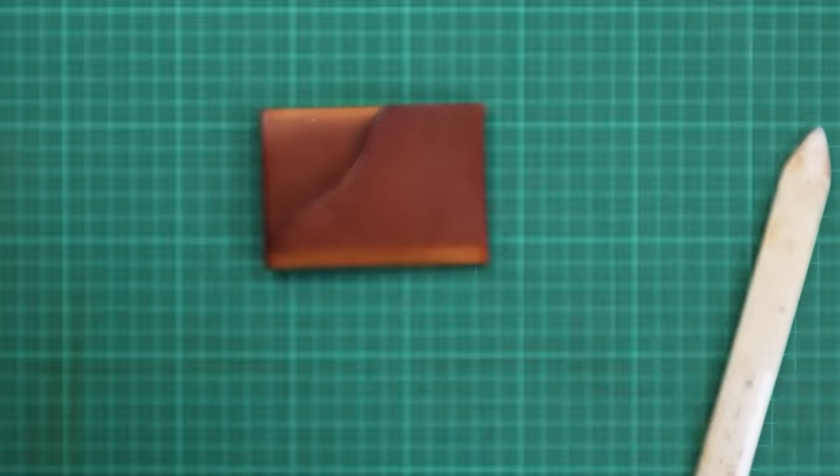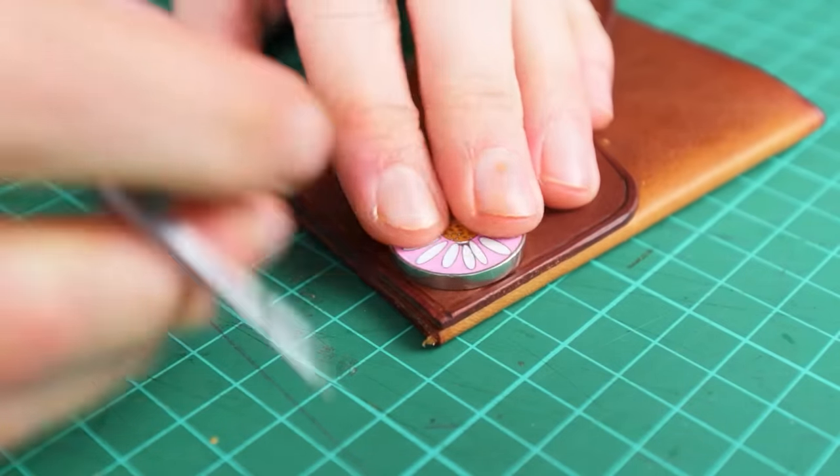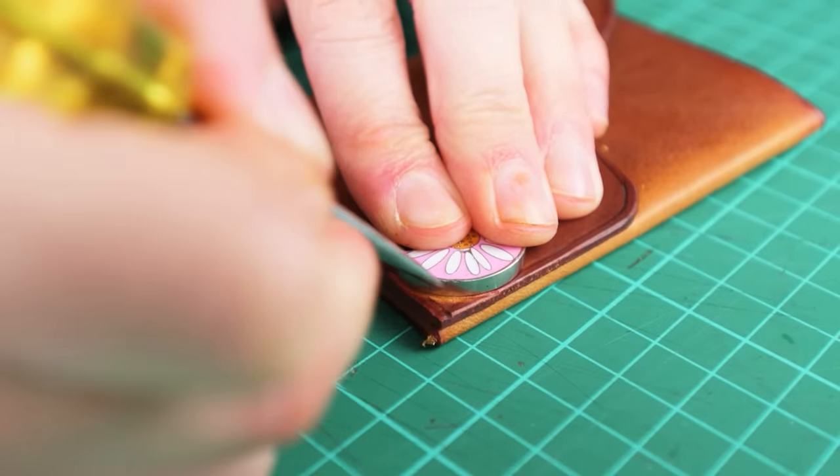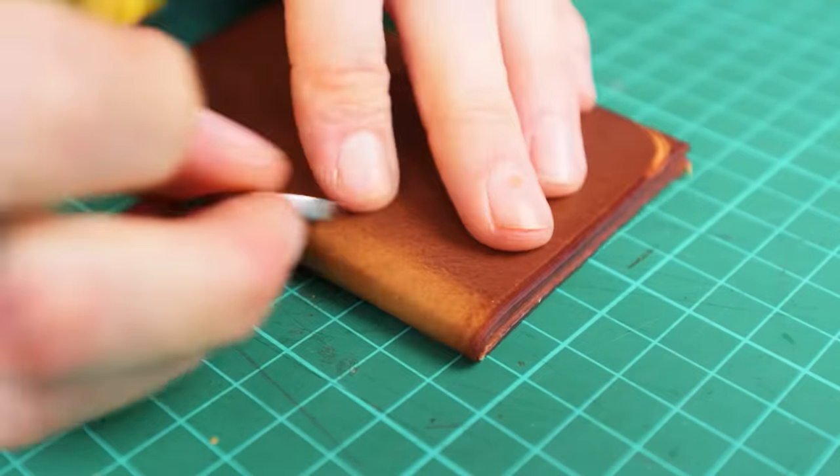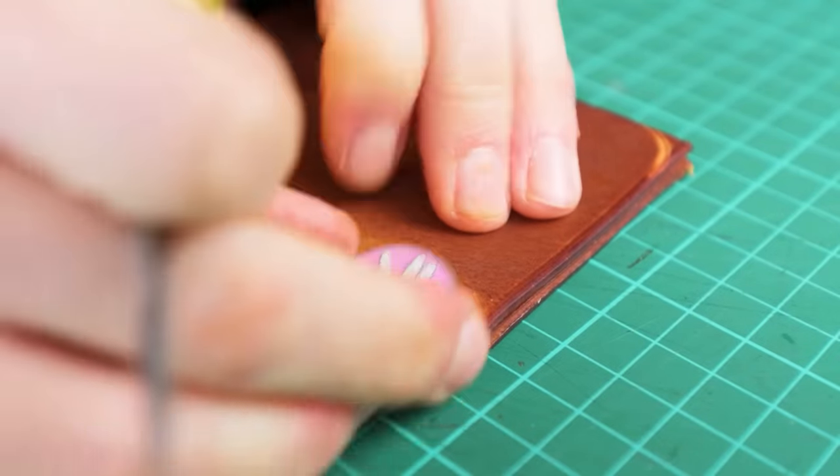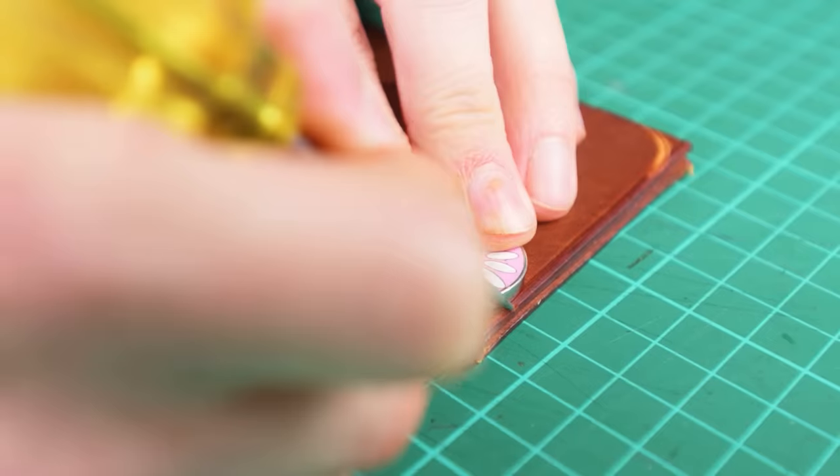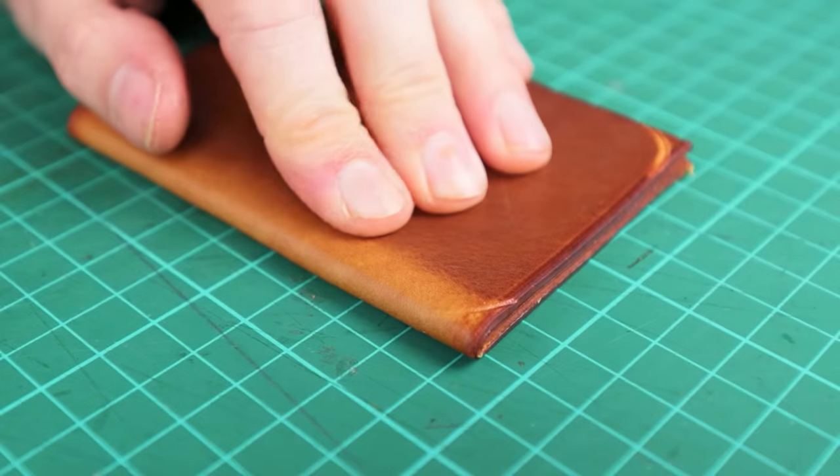So I'm using a trolley token here. It's just a round object that I have in the workshop and we're just going to draw on two rounded corners onto the bottom of our card wrap. And once you have them drawn on you can then cut them with your head knife.